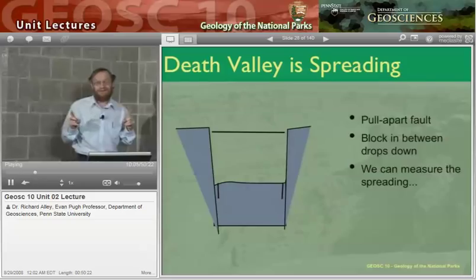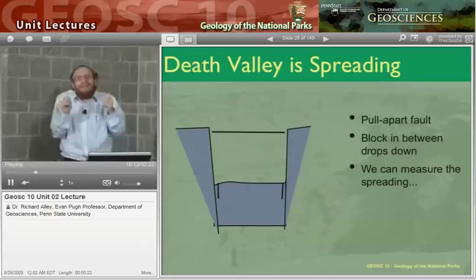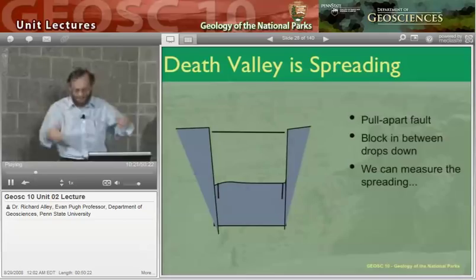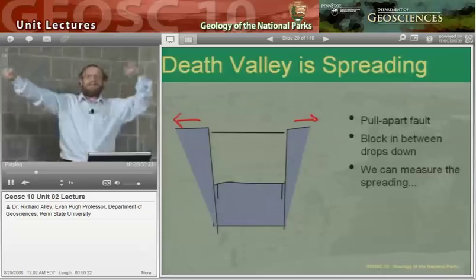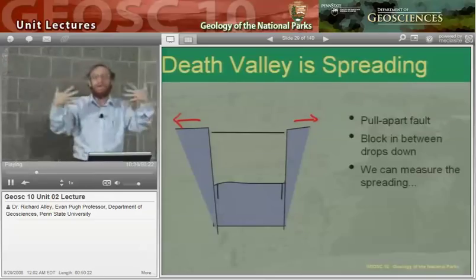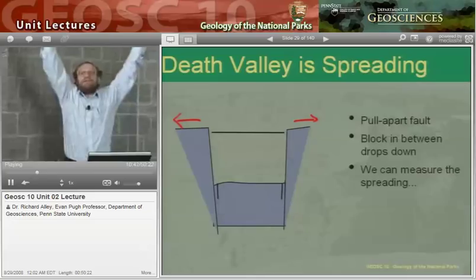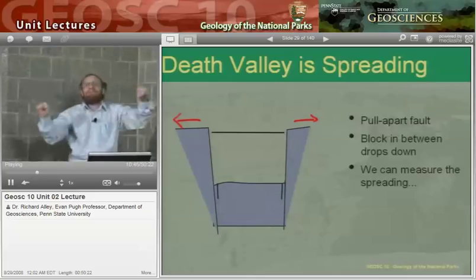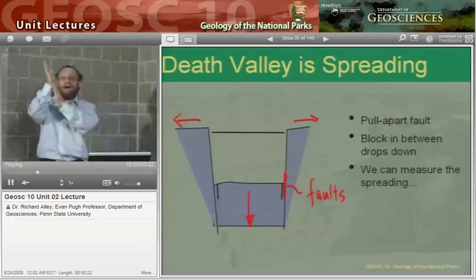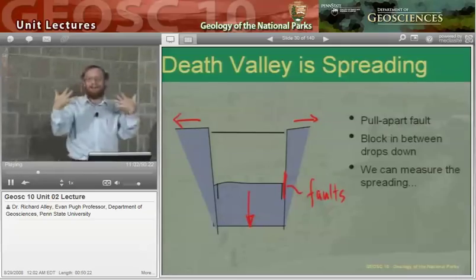The block in between is going to drop down as we pull apart — and this is measured. This is not storytelling anymore. Early geologists said this has to be happening, but it was pretty hard to measure a state spreading at the rate your fingernails grow. But we can do that now with GPS. You can actually put out GPS and measure that the mountains on the east and west of the valley are moving apart. It's actively going on, it's real, it's happening today. Earthquakes drop the valley down; erosion takes stuff off the top and fills the bottom, but then the bottom drops and the sides are raised. Every valley in Nevada and Utah has this same structure.